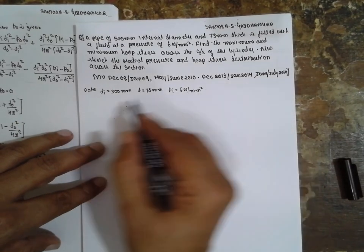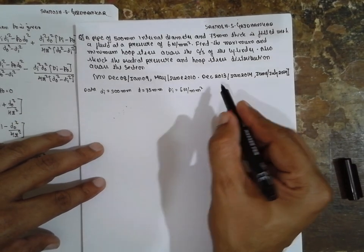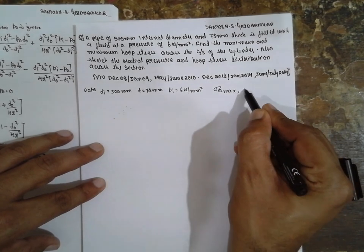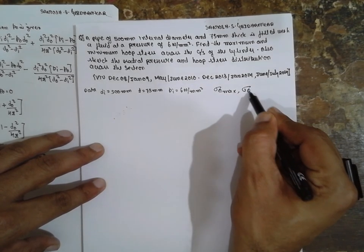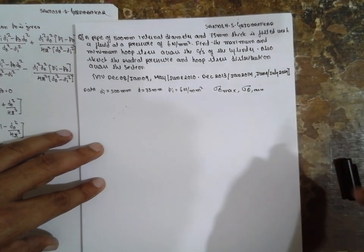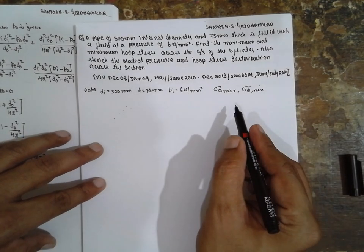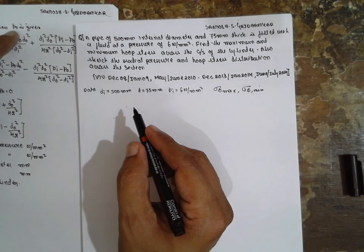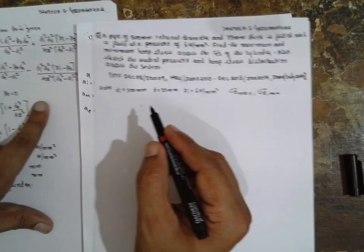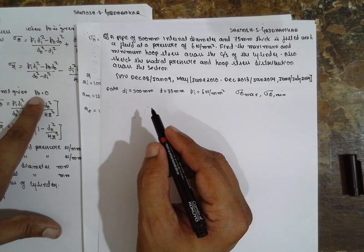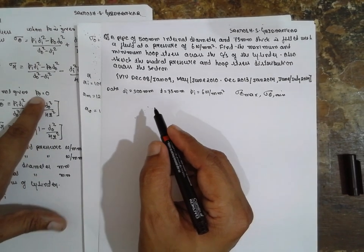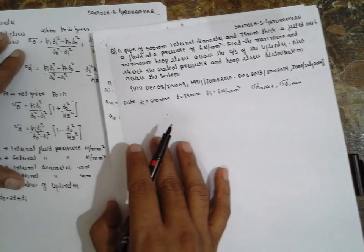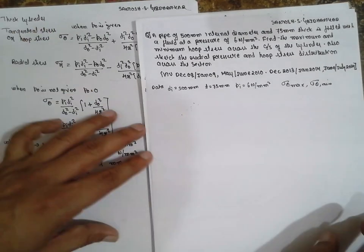These are the data given. We have to find out sigma theta max and sigma theta min. Through the diagram, we have to obtain these. Now I will use the formula. Because P0 is not given, I will directly use this formula where P0 will be 0. If you substitute 0, we obtain this simplified formula. I will consider this formula directly.